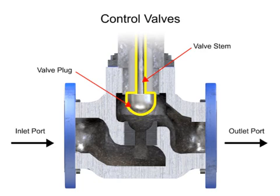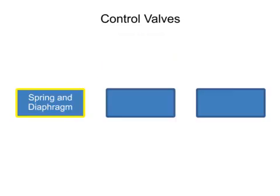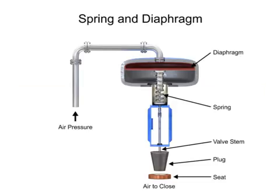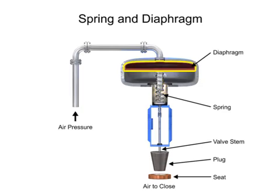Three actuator types are used in control valves: spring and diaphragm, solenoid, and motor. The spring and diaphragm actuator uses a spring and a diaphragm to move the valve stem and plug.